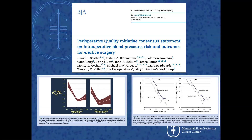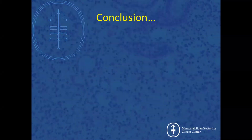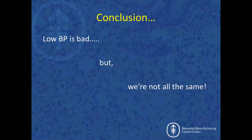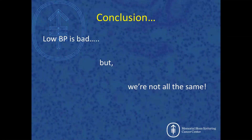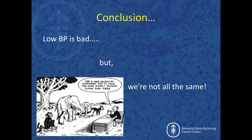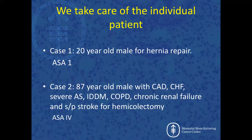The problem with all of this data is that we're not looking at an individual patient. There is no doubt that low blood pressure is bad. However, we're not all the same — the data I just showed you is population-based. You're going to have a median and a standard deviation, a spread around that median, and as with most biological functions, those spreads tend to be quite large. We always have to keep in mind that we take care of the individual patient, not a population. Most practitioners can understand this when considering just two case scenarios.